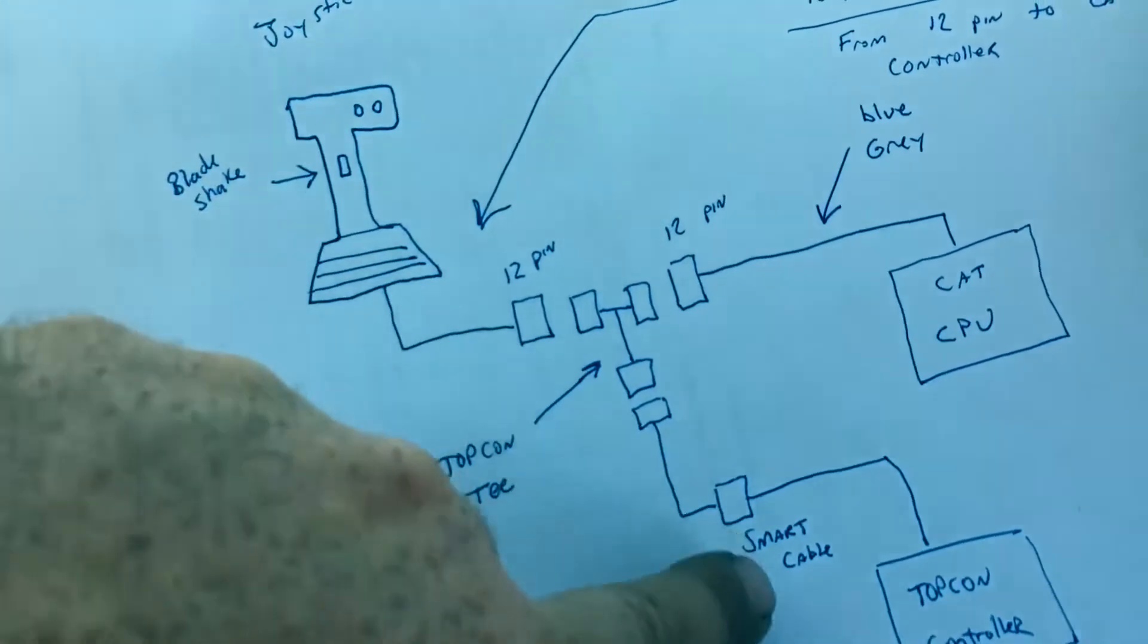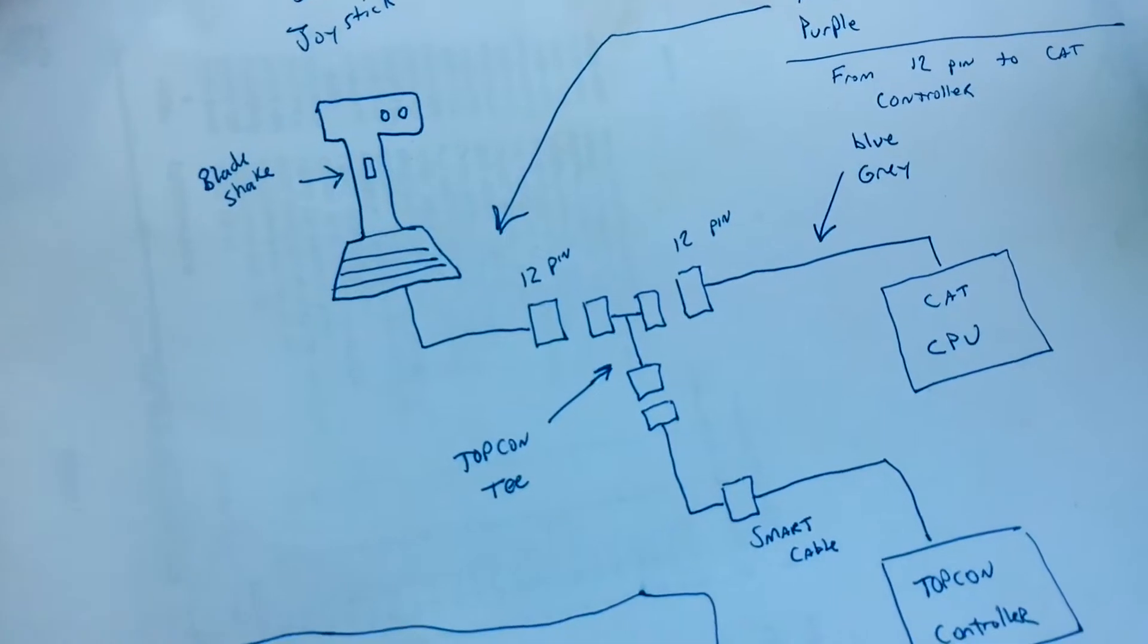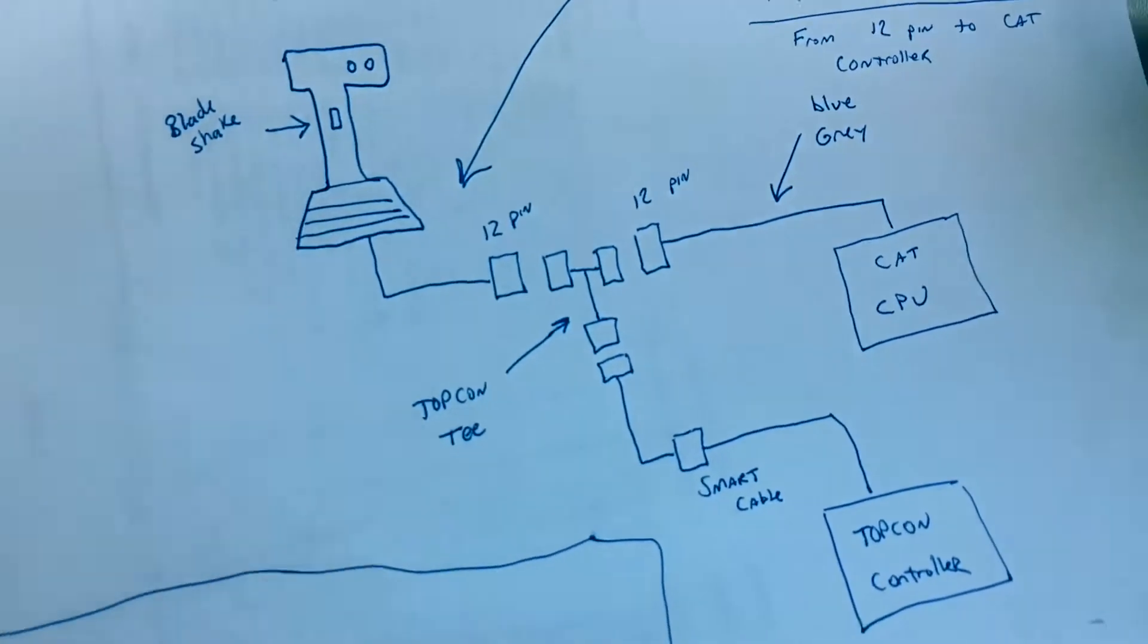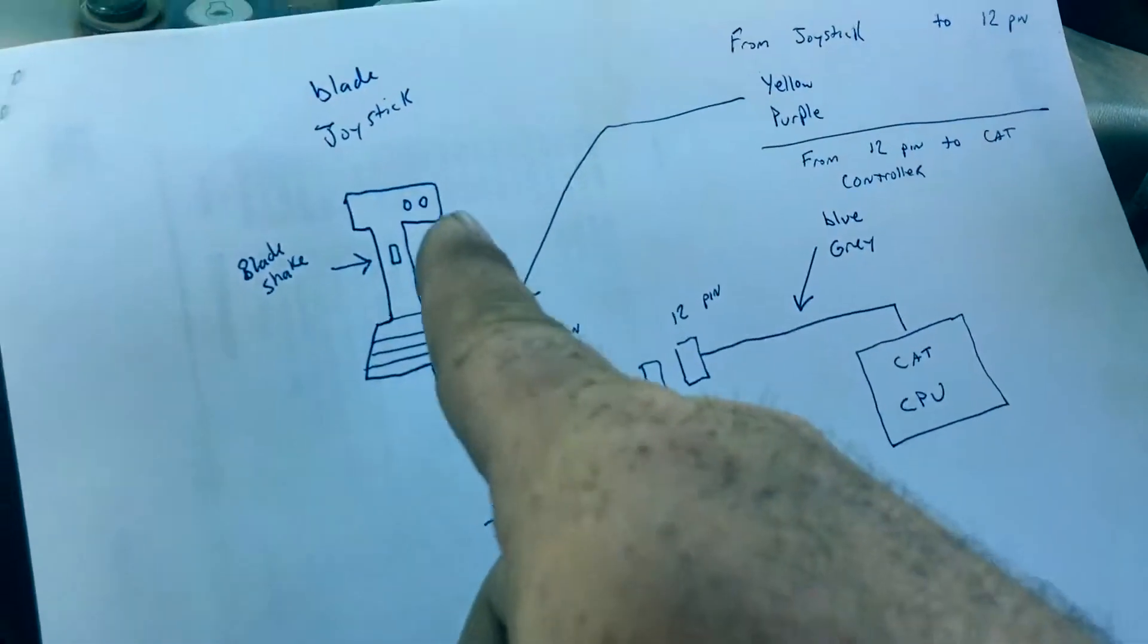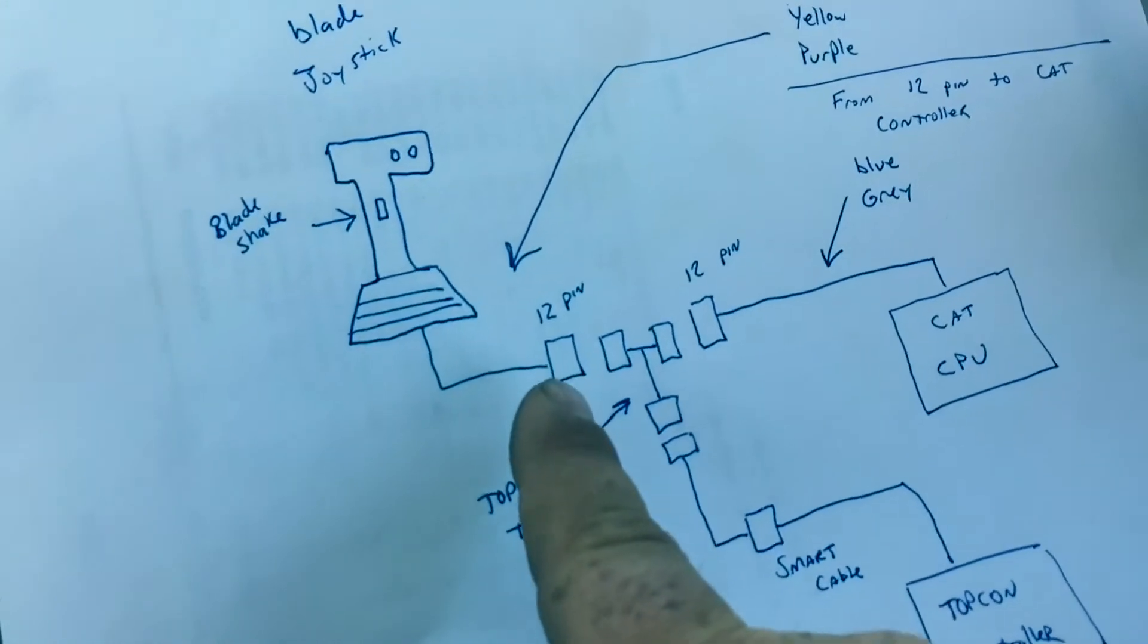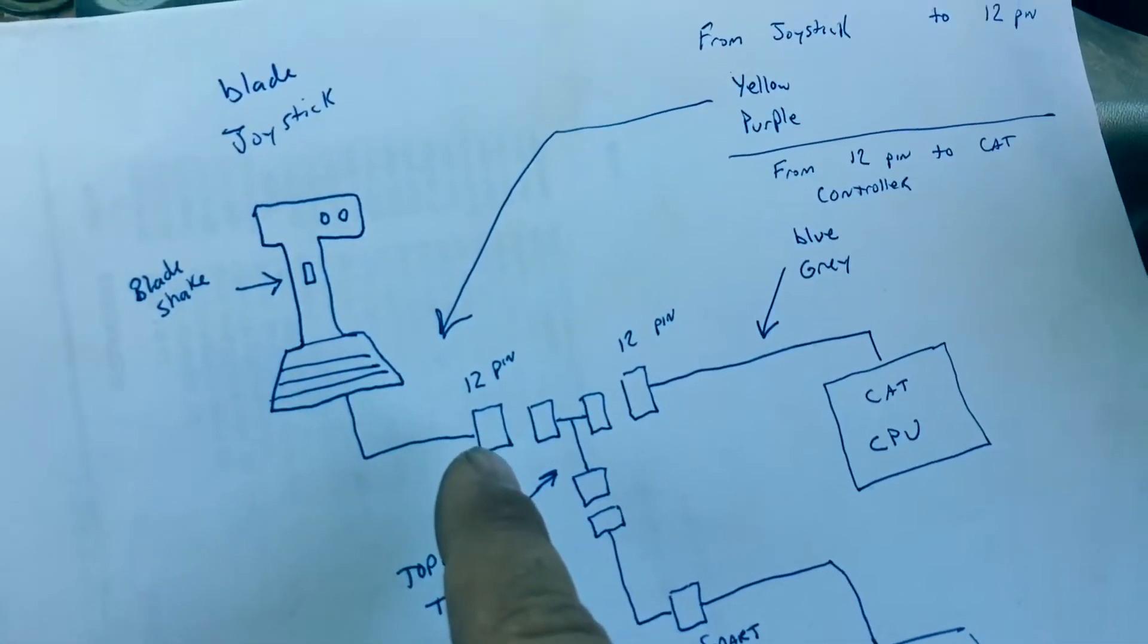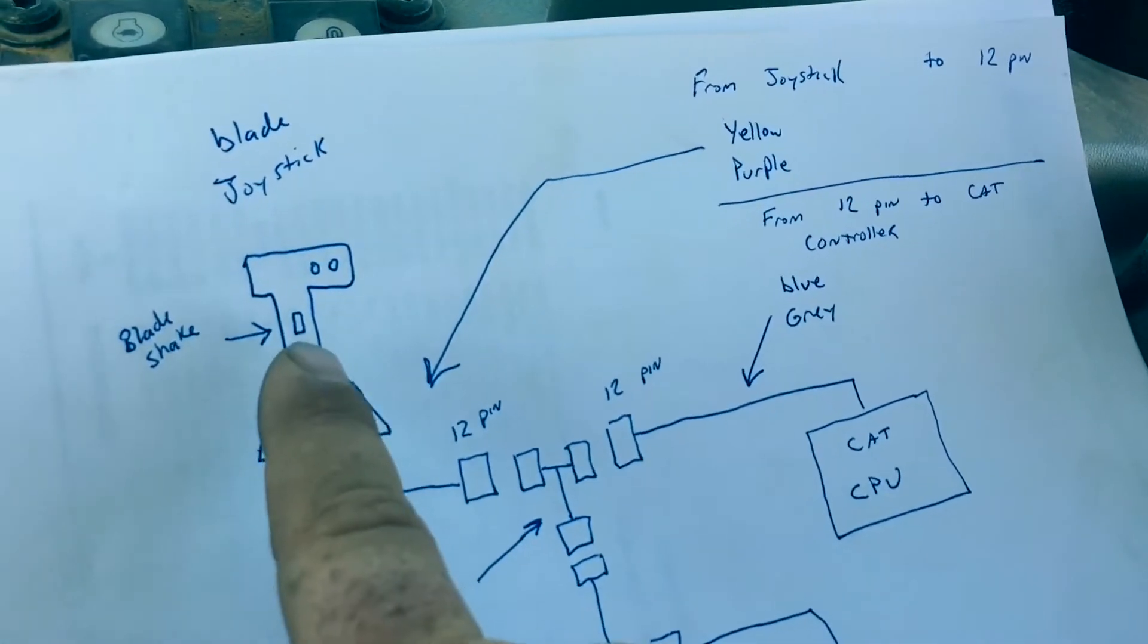And somehow our smart cable that's T'd in here is back feeding something that Caterpillar doesn't like, causing a code to come up on a trigger button. So what we had done is we traced down the wiring starting from the top and come down. The two wires that we're looking for are normally closed and they're yellow-purple coming out of the harness. That goes to your trigger button.